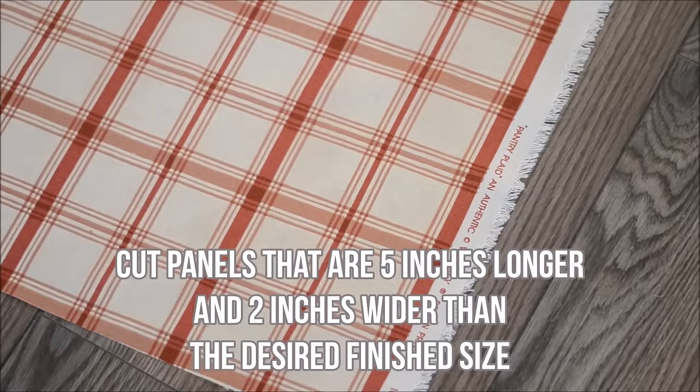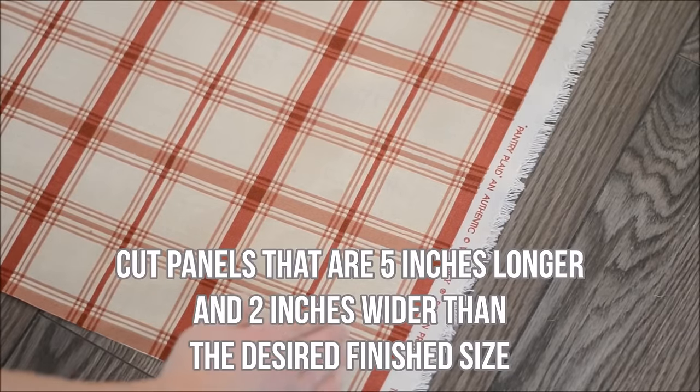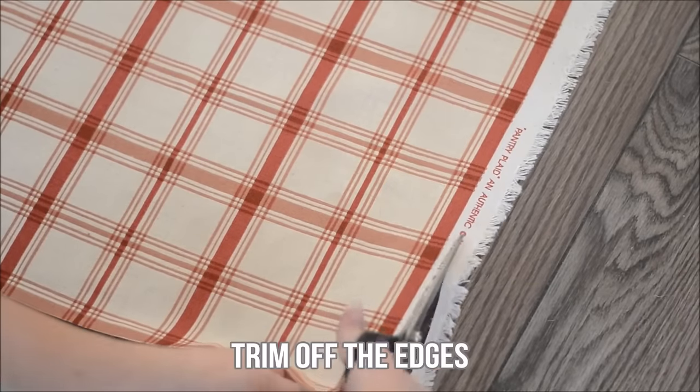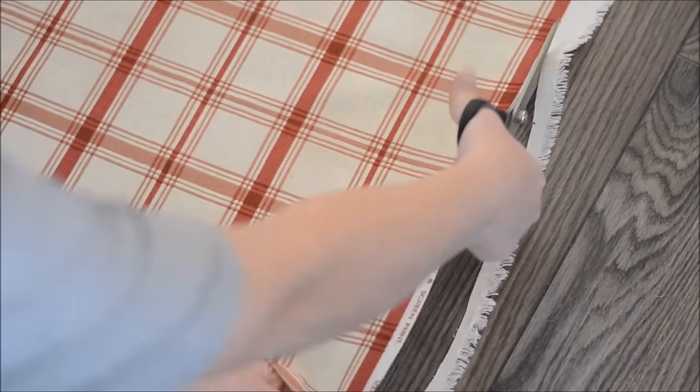To sew your curtain panels, cut fabric that's 5 inches longer and 2 inches wider than the desired finished size of your curtain panel. You can trim off those raw edges.